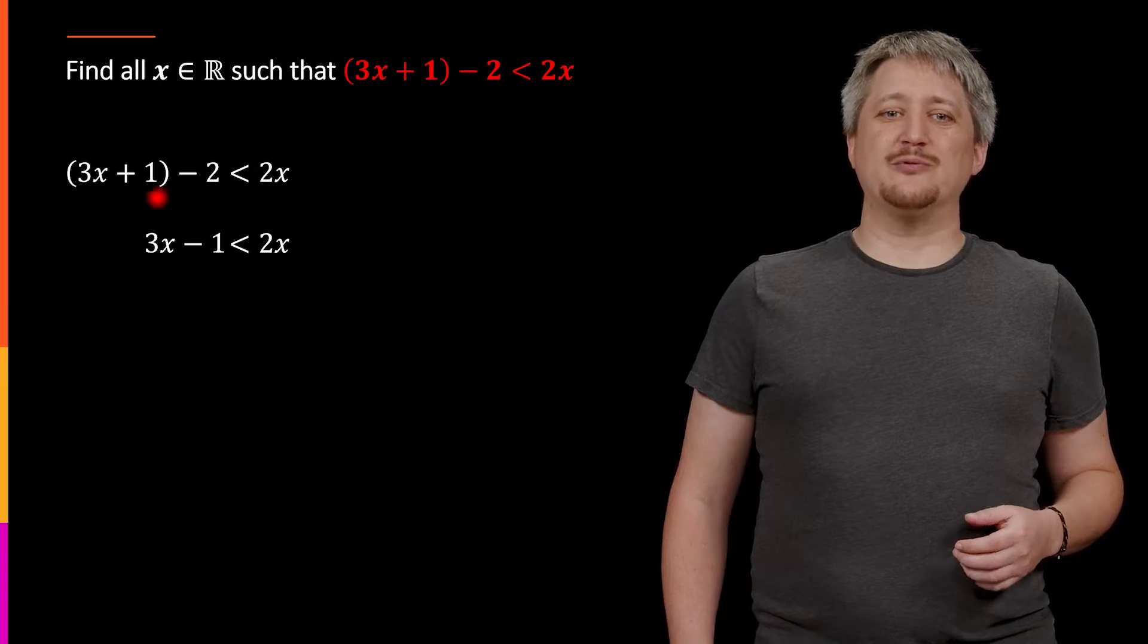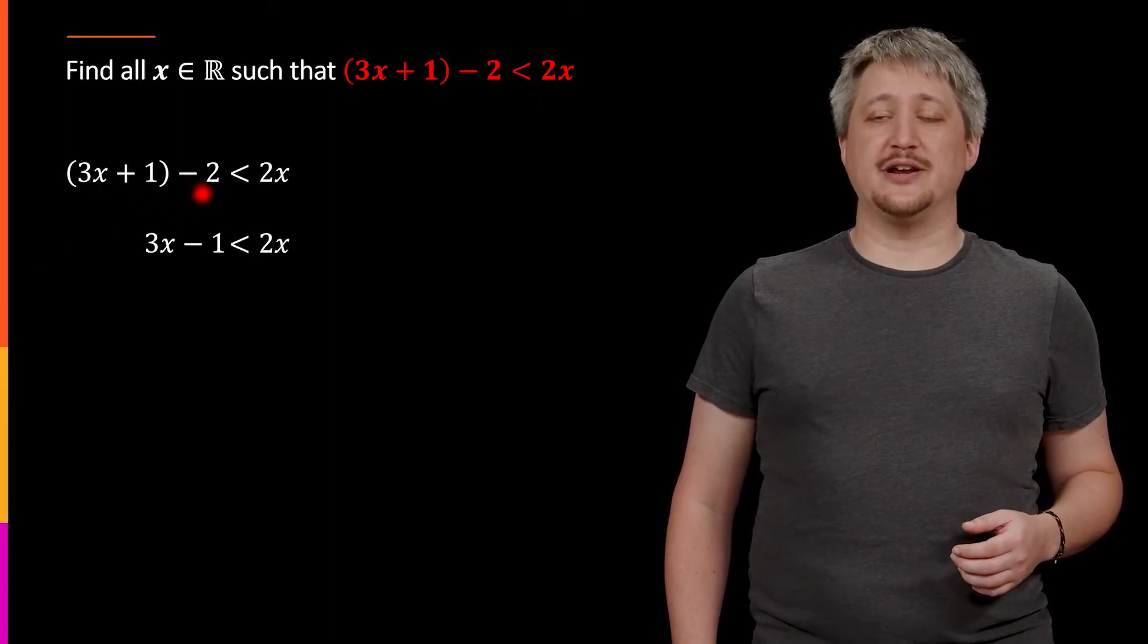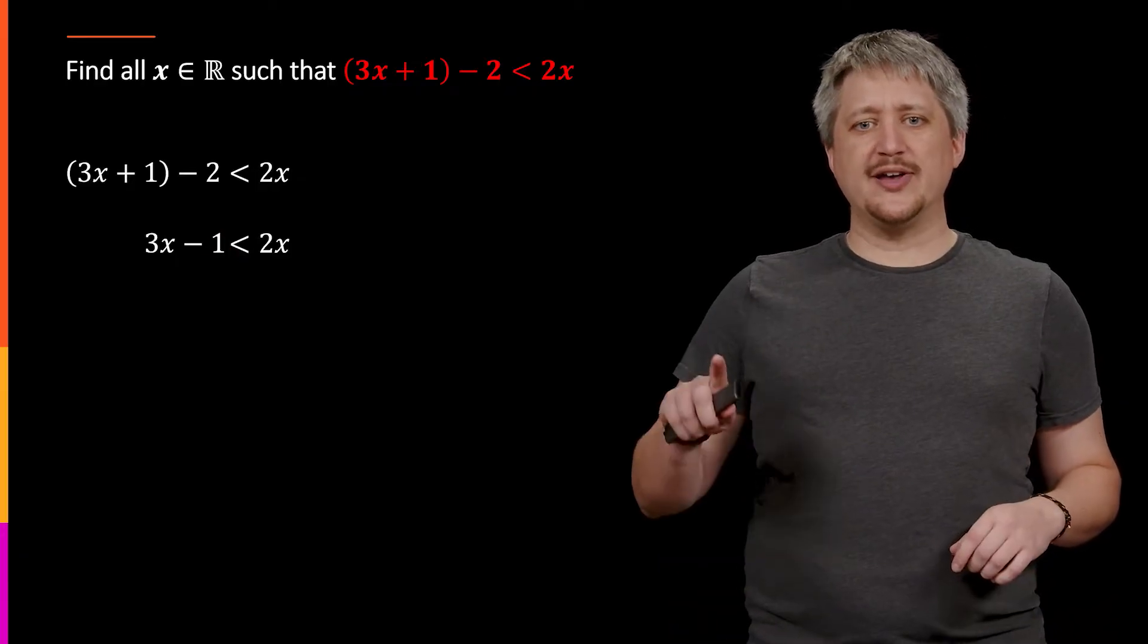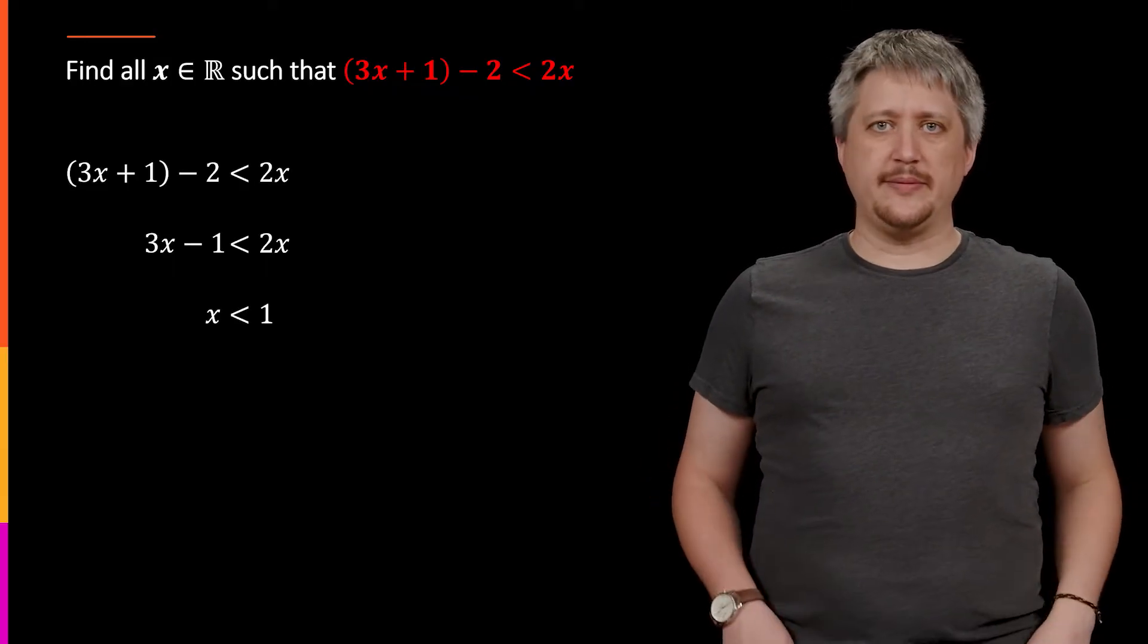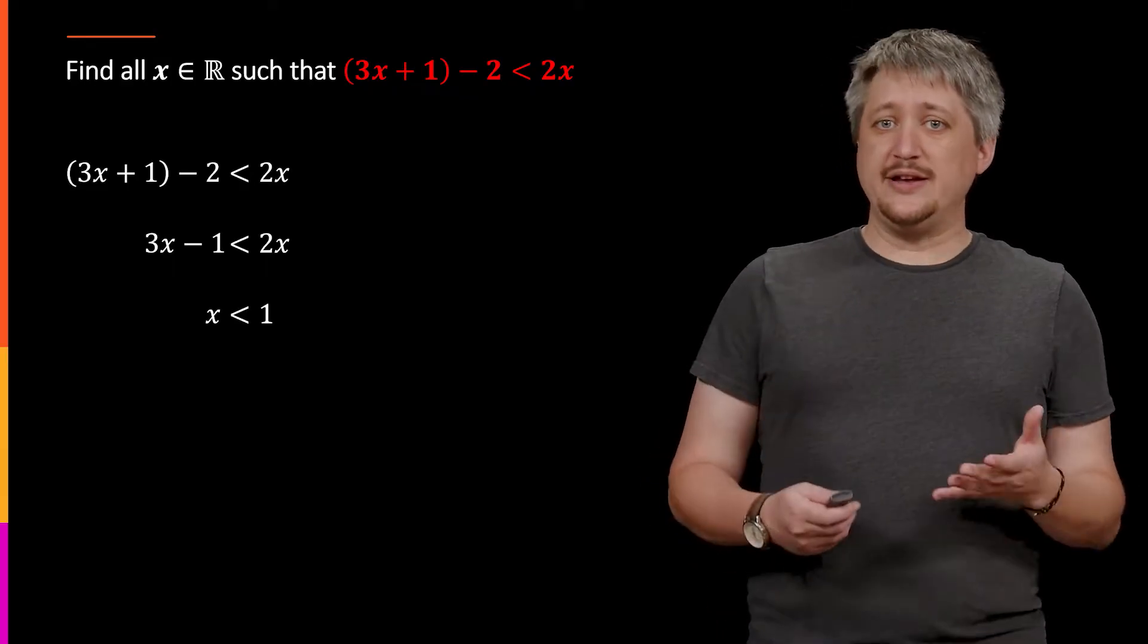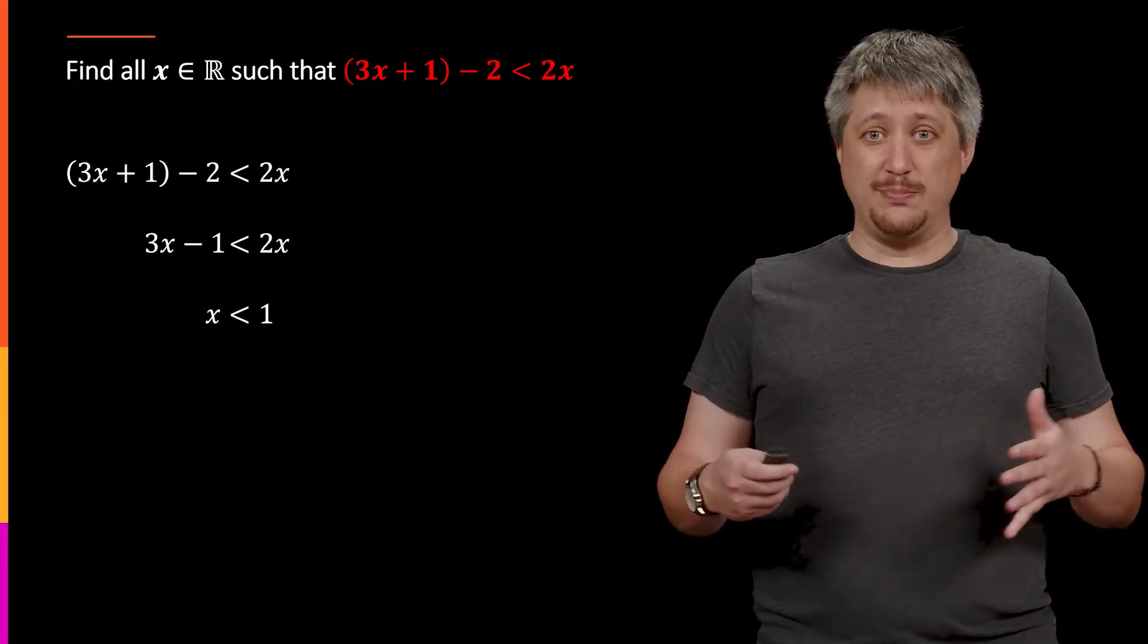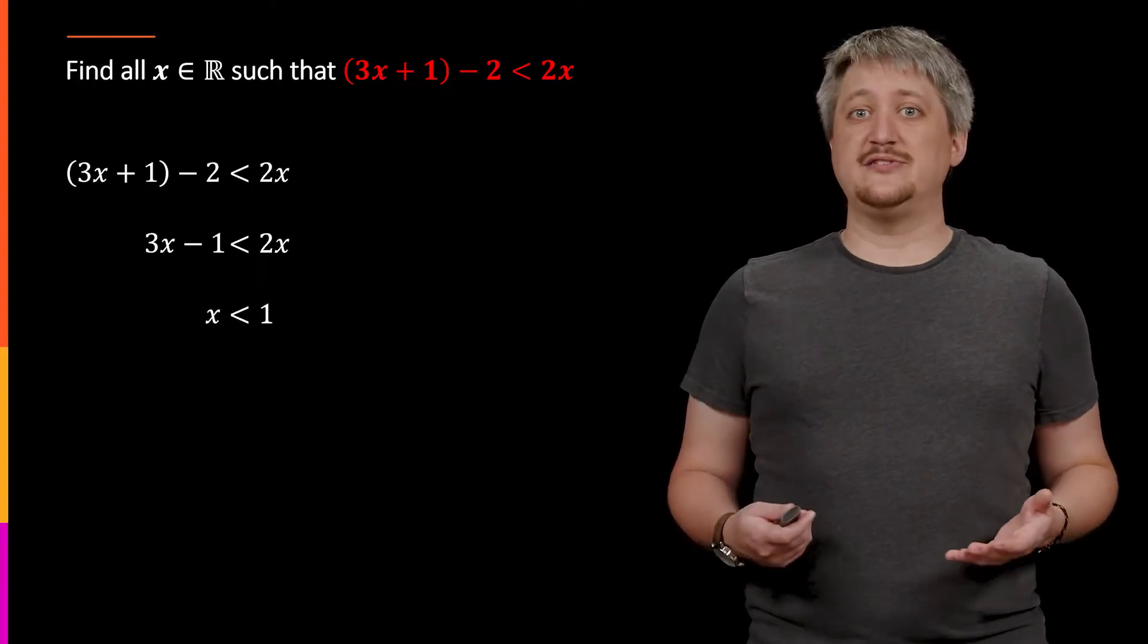We can do that by putting together the stuff on the left. So these parentheses aren't really doing anything, so I can just lift those, put the plus 1 and the minus 2 together to get that minus 1. Then I could add 1 to both sides and subtract 2x from both sides, and that gets me that x is less than 1.